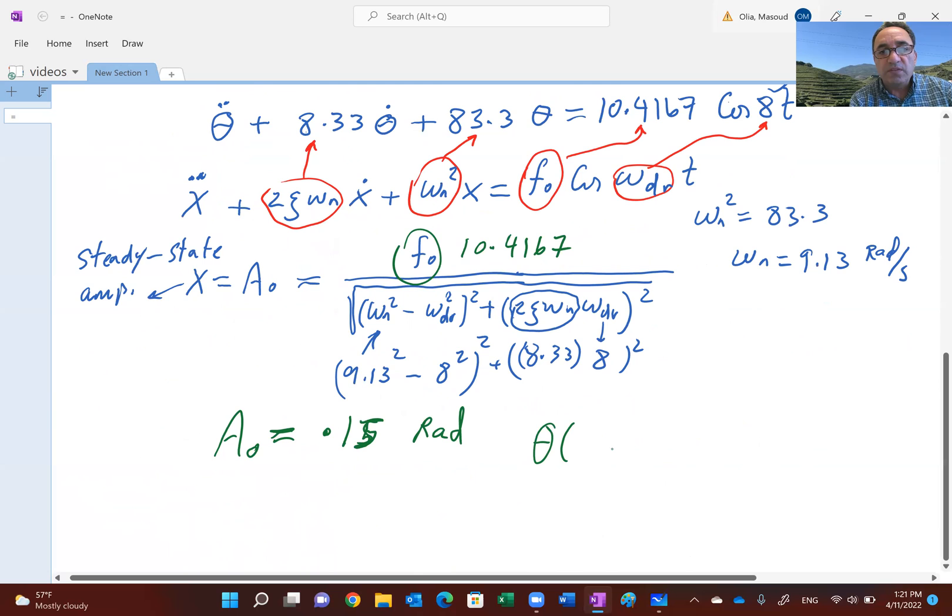That was the steady-state solution. Theta as a function of time is this constant A_0, since we have a cosine as a force, as an input, would be cosine omega_dr t minus some phase angle. The phase angle can be determined, but what's really important in design is this steady-state amplitude that you need to calculate.